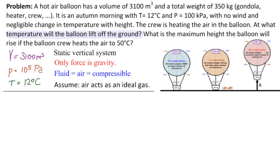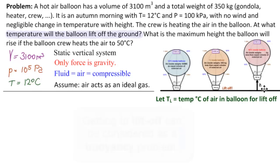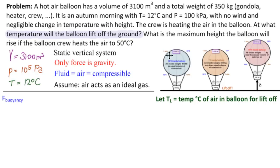Let T_L be the temperature in degrees Celsius of air in the balloon for liftoff. Liftoff can be treated as a buoyancy problem — it can also be treated as a Z equals zero problem, and we should get the same answer in both cases. Let's look at the easy way, which is the buoyancy approach. The force of buoyancy is the weight of what's being displaced — the weight of the air displaced by the balloon.